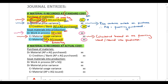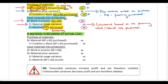Now let's look at what happens if material is recorded at actual cost. The journal entry on purchase is again to debit material and credit creditors or bank. Regardless of whether material is recorded at actual or standard cost, you always pay the supplier the actual amount — actual price × actual quantity purchased. In this scenario, material is debited at the actual price × actual quantity purchased. Both sides of the journal entry are now exactly the same, so there is no price variance on purchase.